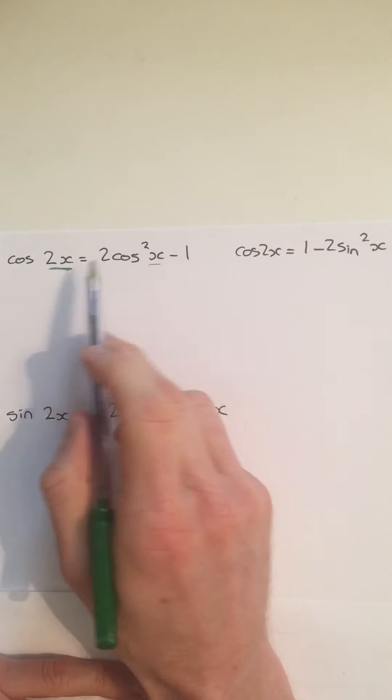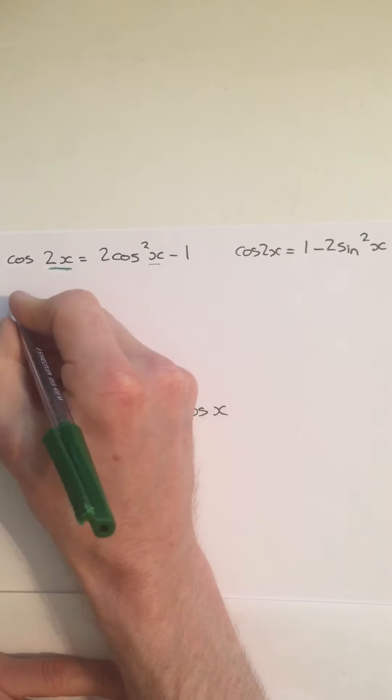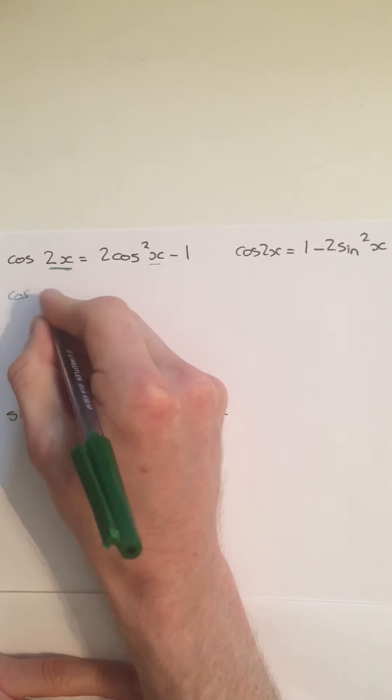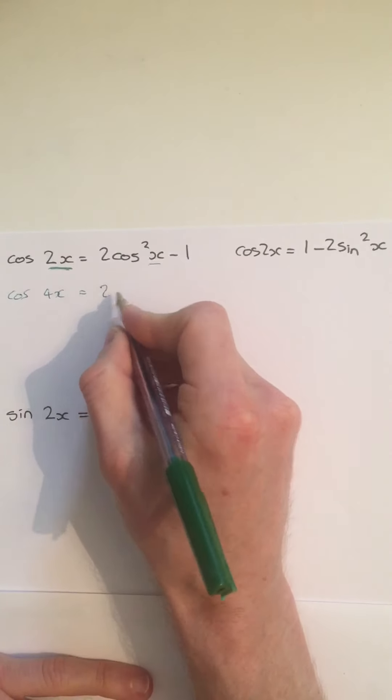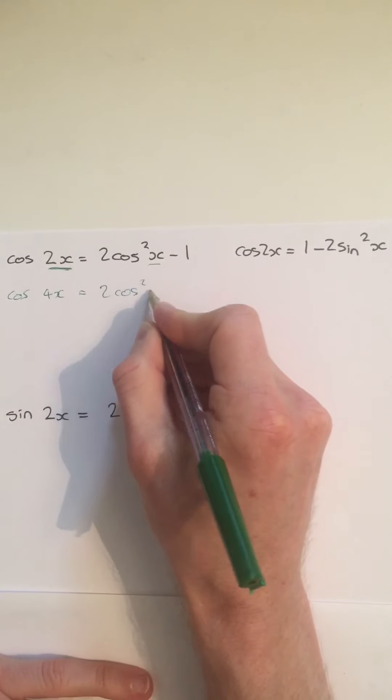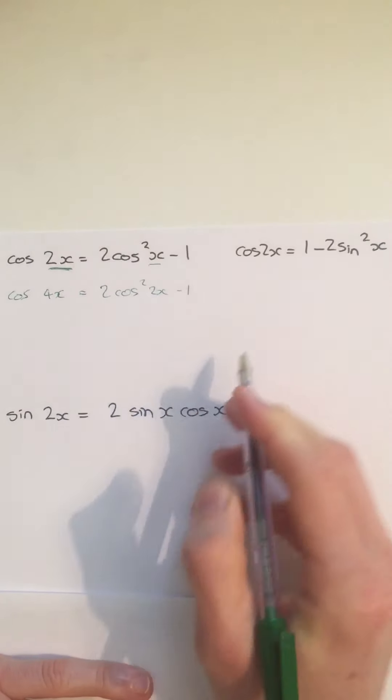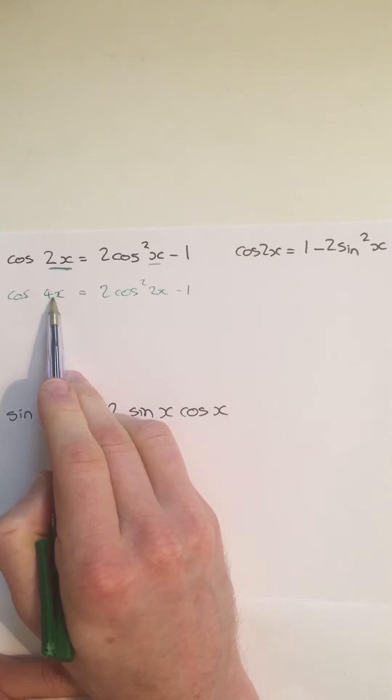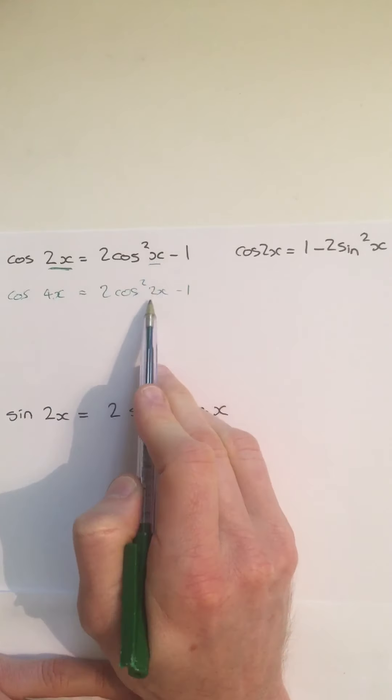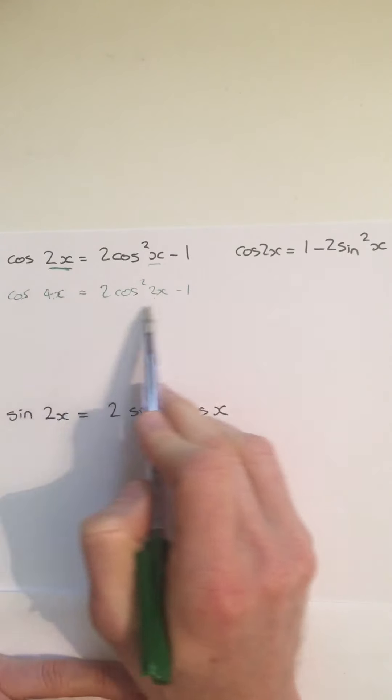For example, I could double both of these. So cos 4x would be equivalent to 2 cos squared 2x minus 1. Just doubling the 2x to give 4x, just doubling the x to give 2x, this is still true.